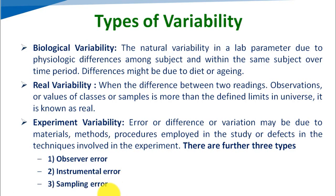So mainly the types of variability are three: biological variability, real variability, and experiment variability. This variability can be found out with the help of the measure of dispersion.